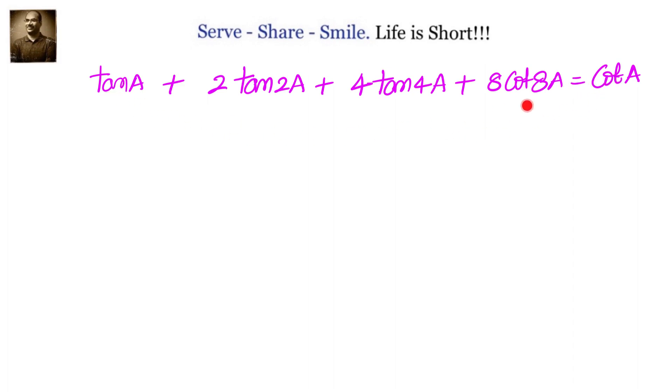Now at first look the problem looks very complicated because we are going from a to 2a to 4a to 8a. But if you are able to understand the relation between tan a and cot a, if you subtract them, are we going to get an easier way to move to the next level? If you are able to crack that relationship then it should be very easy. So let's go ahead and do that.